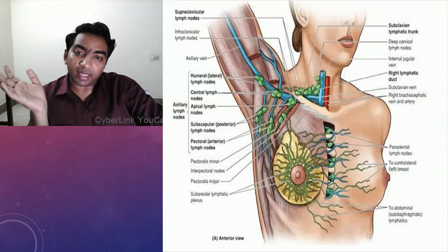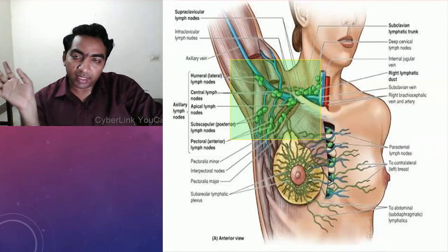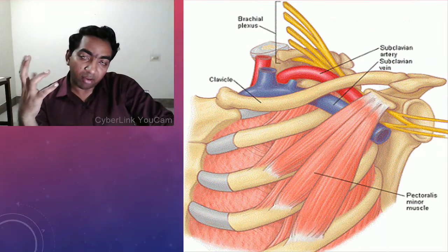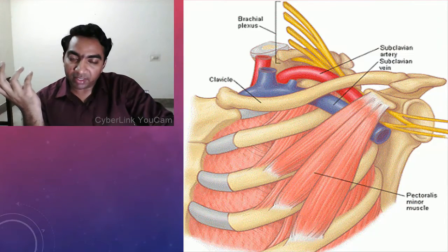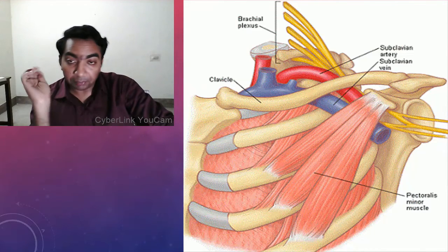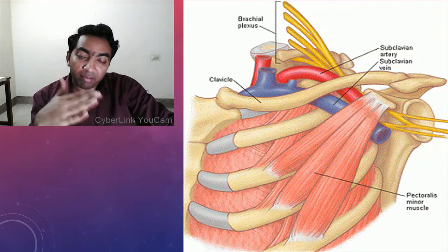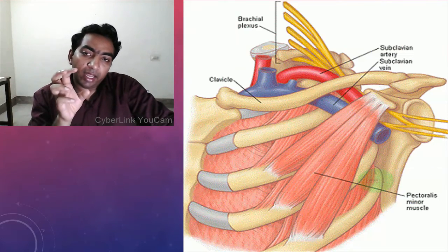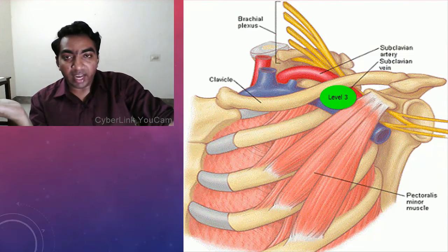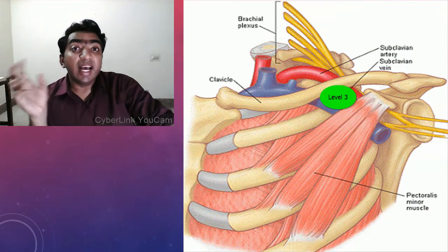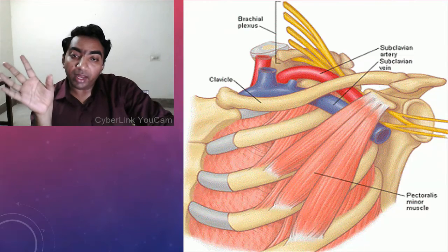The axillary lymph nodes generally lie along the axillary vein and its tributaries, but when it comes to a surgeon, the names don't matter — the surgeon thinks in terms of levels. When we remove the pectoralis major muscle, we see the pectoralis minor muscle and the axillary vein. Lateral to the pectoralis minor we have Level 1 lymph nodes; underneath the pectoralis minor we have Level 2 lymph nodes; and above the pectoralis minor we have Level 3 lymph nodes. These are the surgeon's viewpoint of lymph nodes.